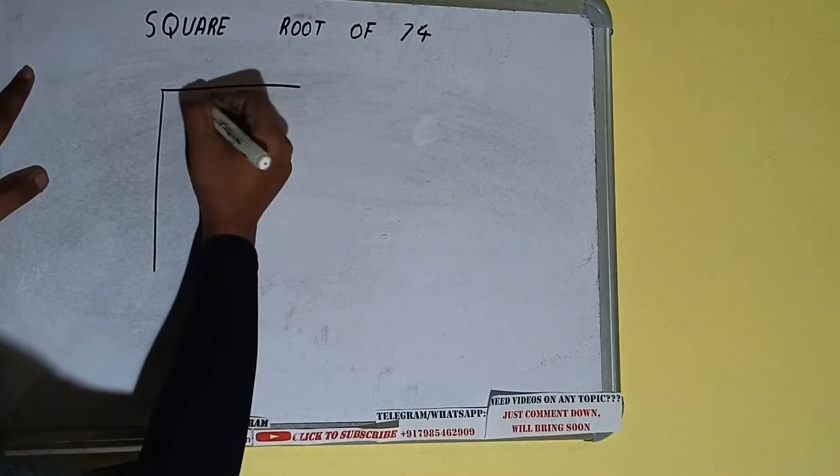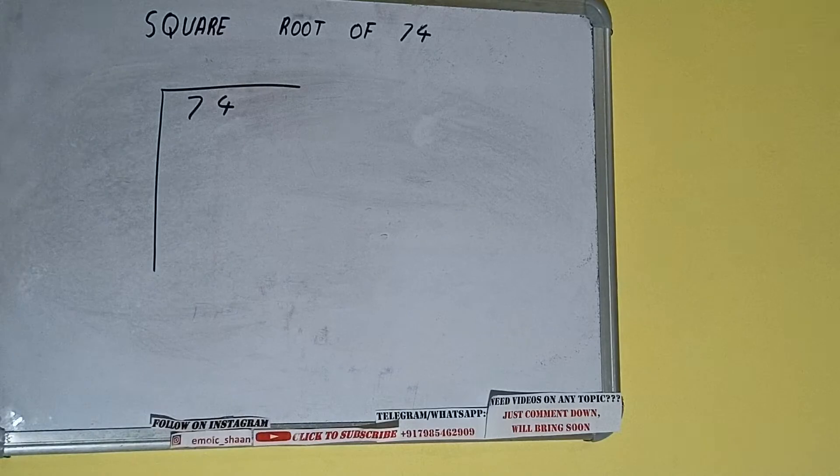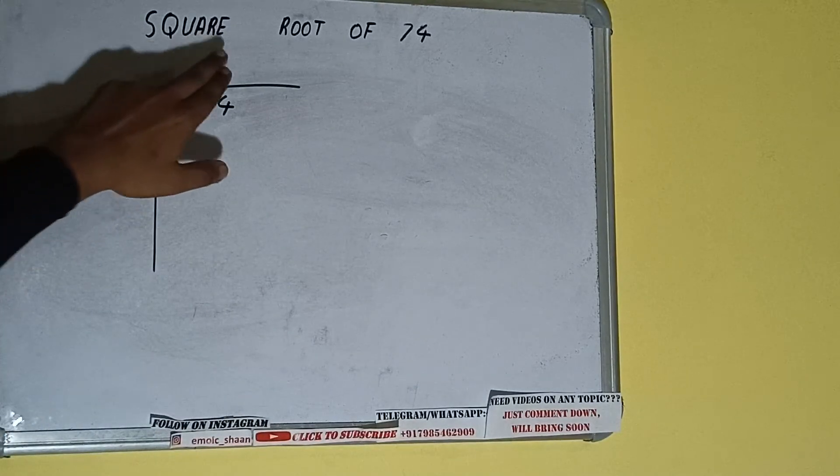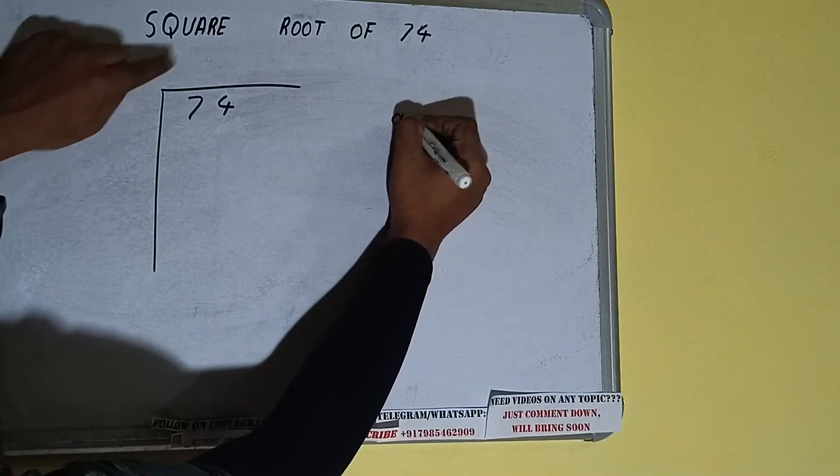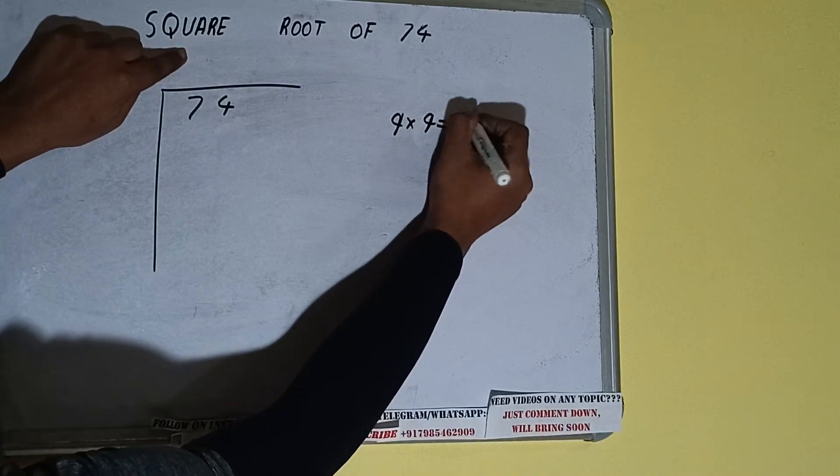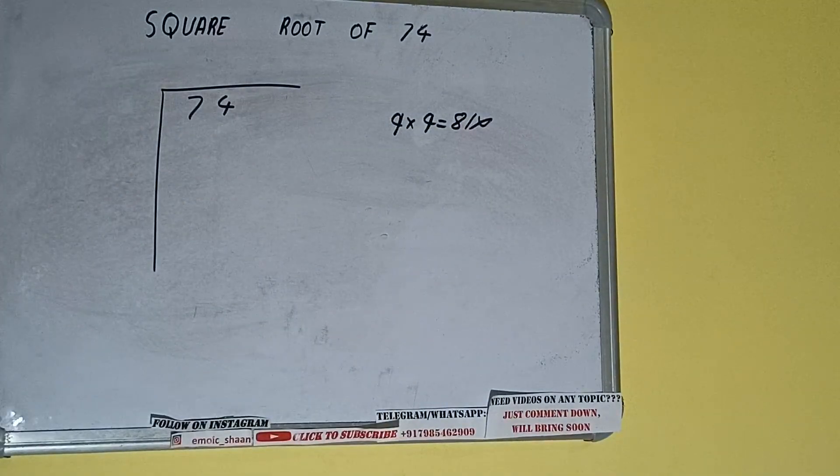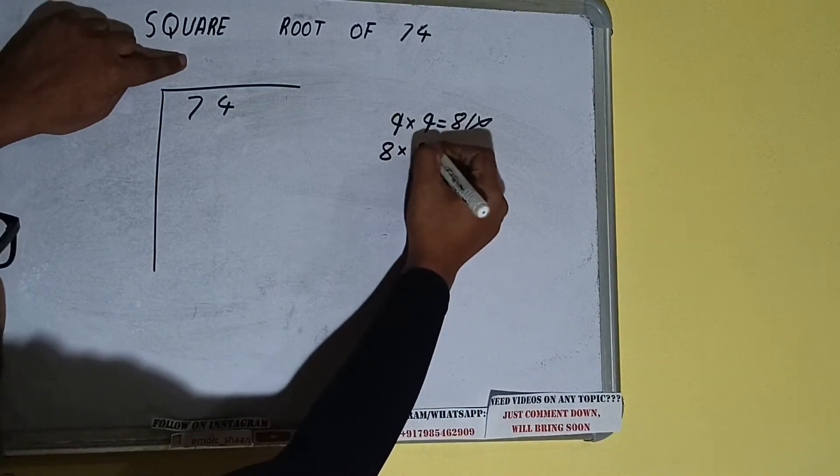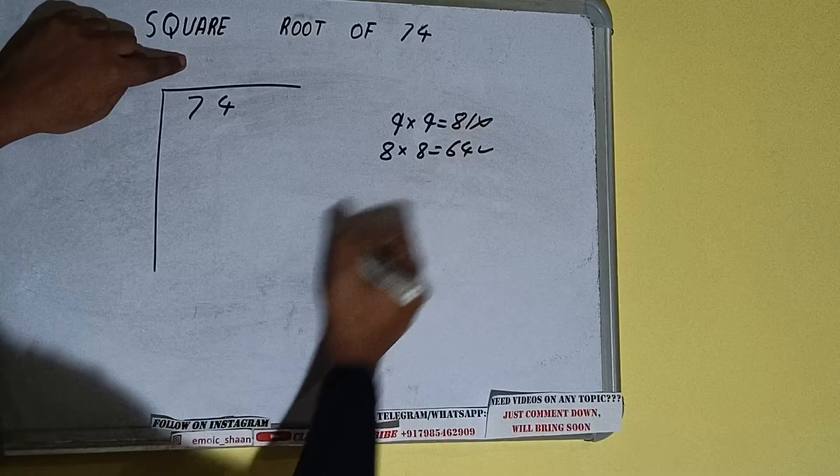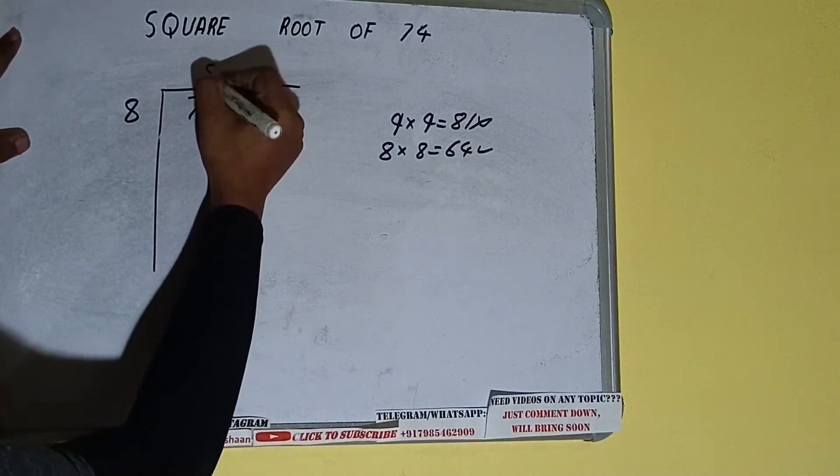First of all we need to write the number like this. The next thing we need to know about is whatever number we write here, we have to write here also. So if we write 9 here and 9 here, it will be 81 which is greater than 74. So we cannot take it. If we write 8 here and 8 here, it will be 64 which is good to take.